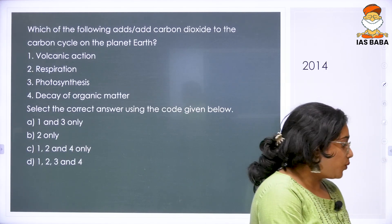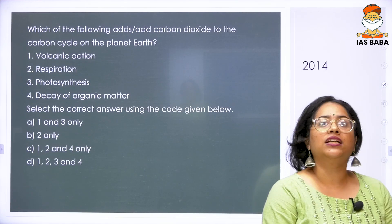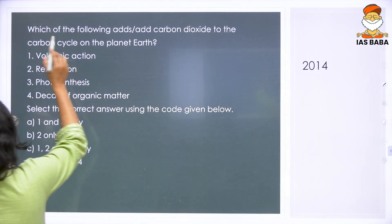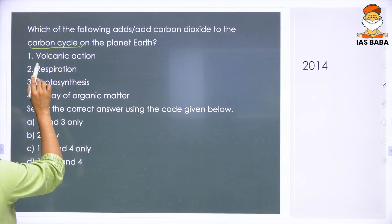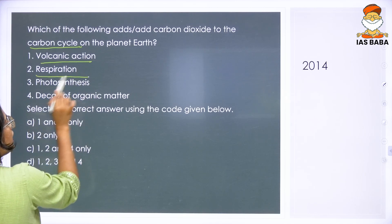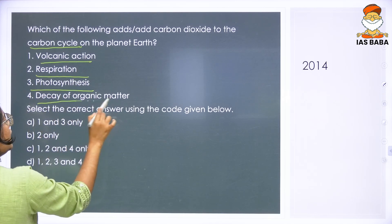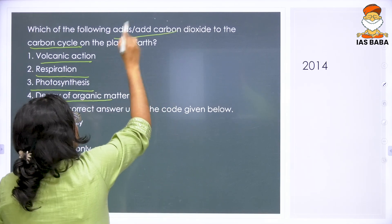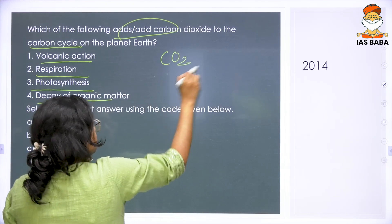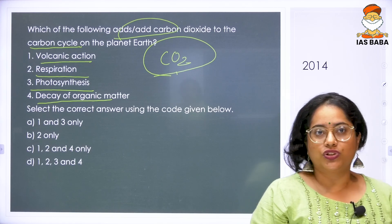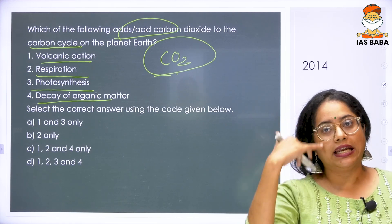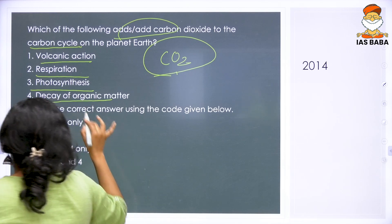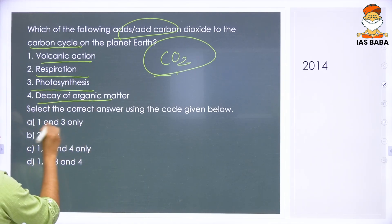Next is a 2014 question: which of the following adds carbon dioxide to the carbon cycle on the planet? The options are volcanic action, respiration, photosynthesis, and decay of organic matter. They are asking which adds carbon dioxide. In photosynthesis, carbon dioxide is taken in, so it will not add CO2 — anything with option 3 can be eliminated.